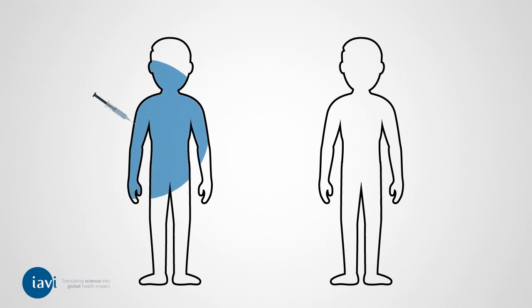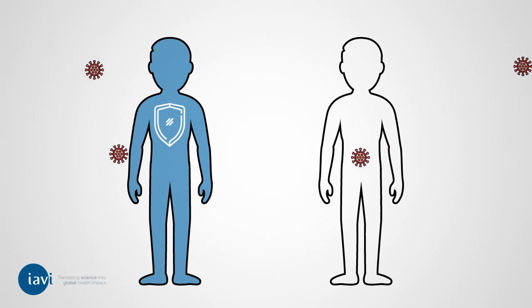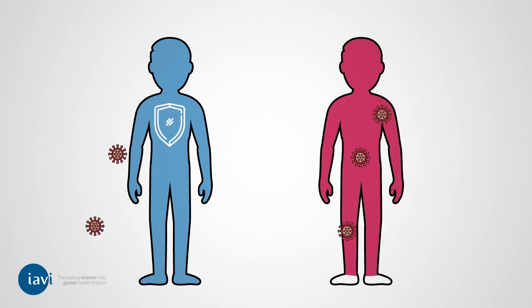A vaccine is a substance introduced to the body to protect a person against specific infections. It teaches the body to recognize the virus or bacteria that causes the infection and helps the immune system fight back against it.